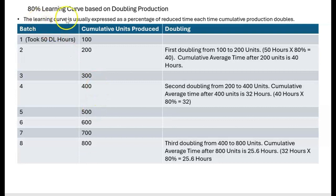Now let's apply an 80% learning curve. The learning curve is expressed as a percentage of reduced time each time cumulative production doubles — the exam will give you this percentage. We're using an 80% learning curve here. The exam will also tell you how many direct labor hours were needed to make the very first batch. In this case, it took 50 direct labor hours to make the first batch of 100 units.